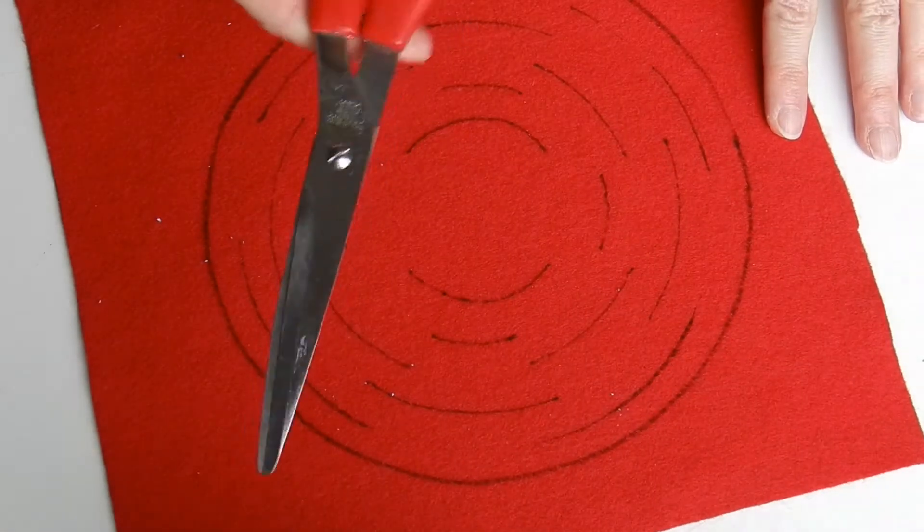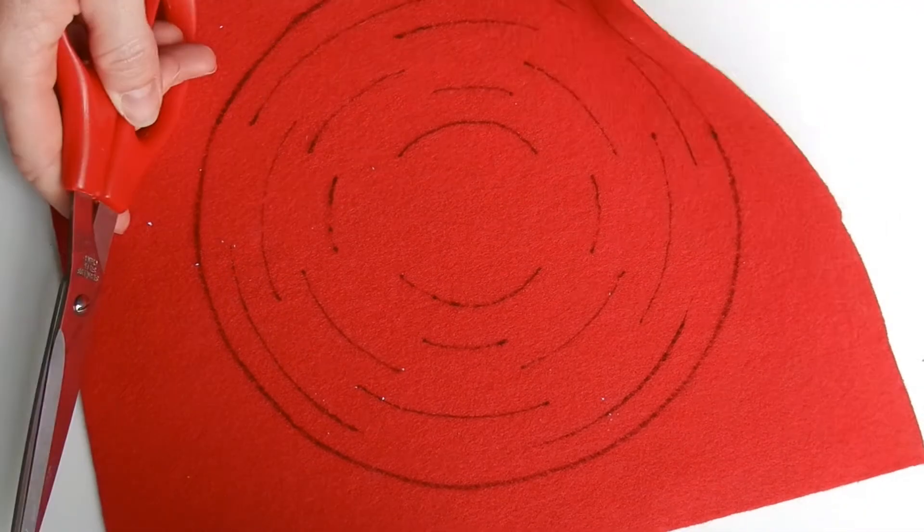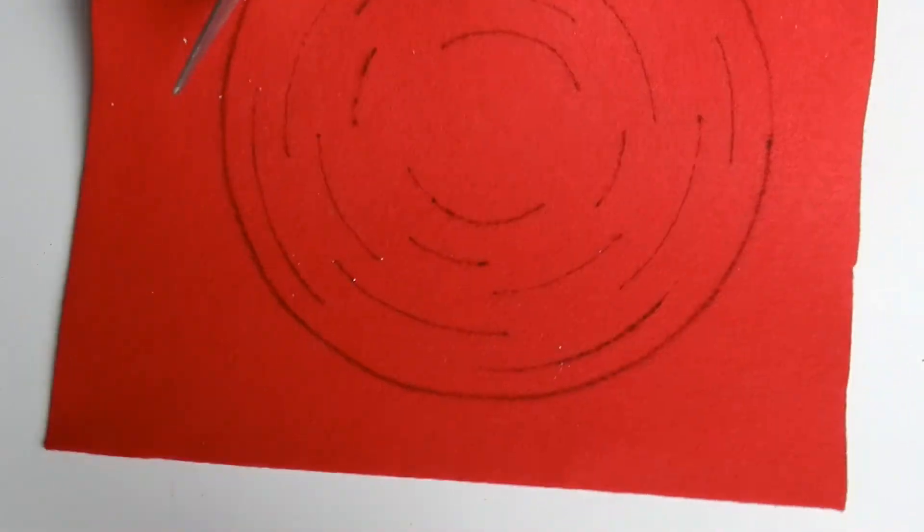Once your pattern is traced onto your felt you can brush away any of the little pieces of paper that came through when you were cutting through. Then you're going to take a pair of scissors and cut the outside of your pattern so that you have a felt circle laying in front of you.